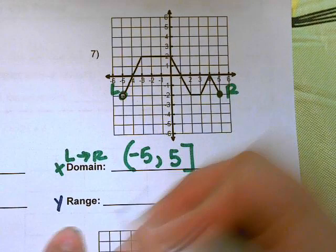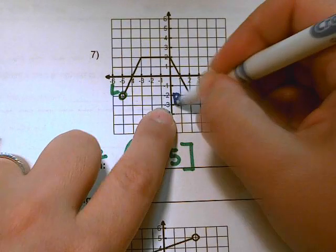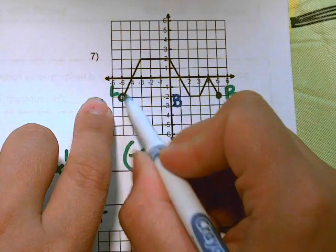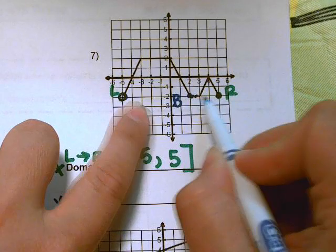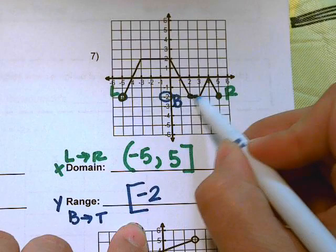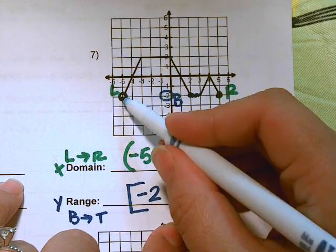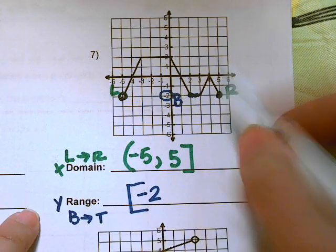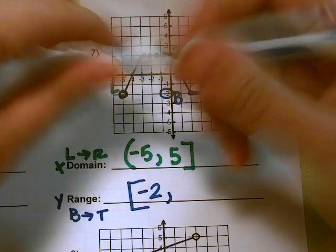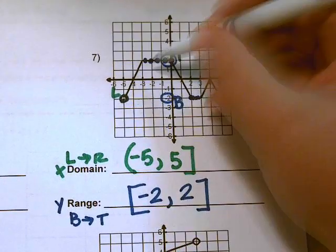The range is all the y-values, so we look from the bottom to the top. The bottom of the graph sits at a y-value of negative 2. We use a bracket because those points are solid, even though one endpoint has an open circle. The top of the graph has a y-value of 2, and we use a bracket because it's solid.